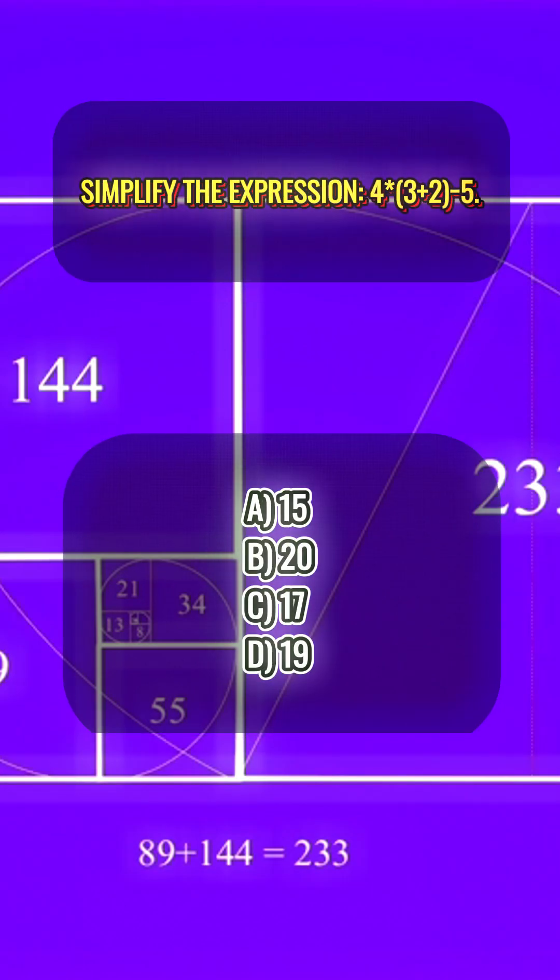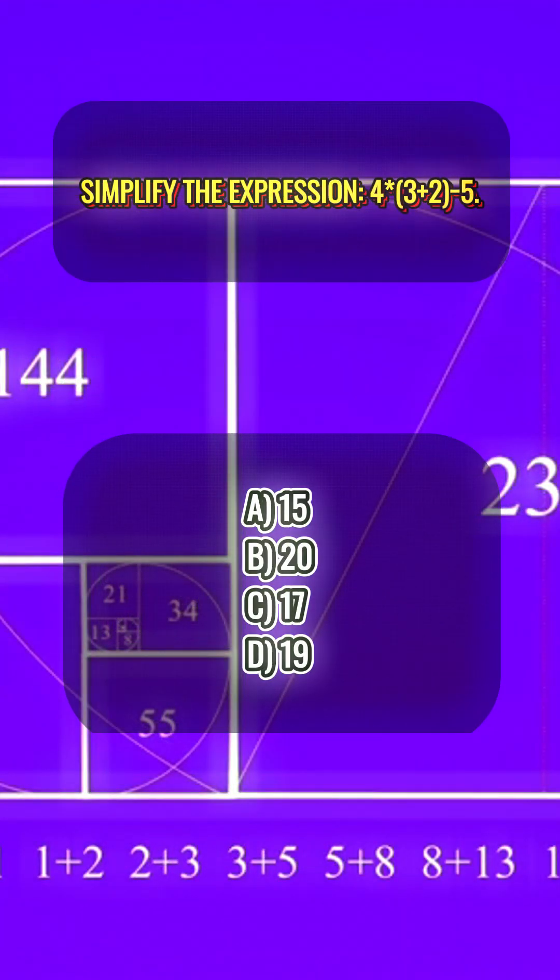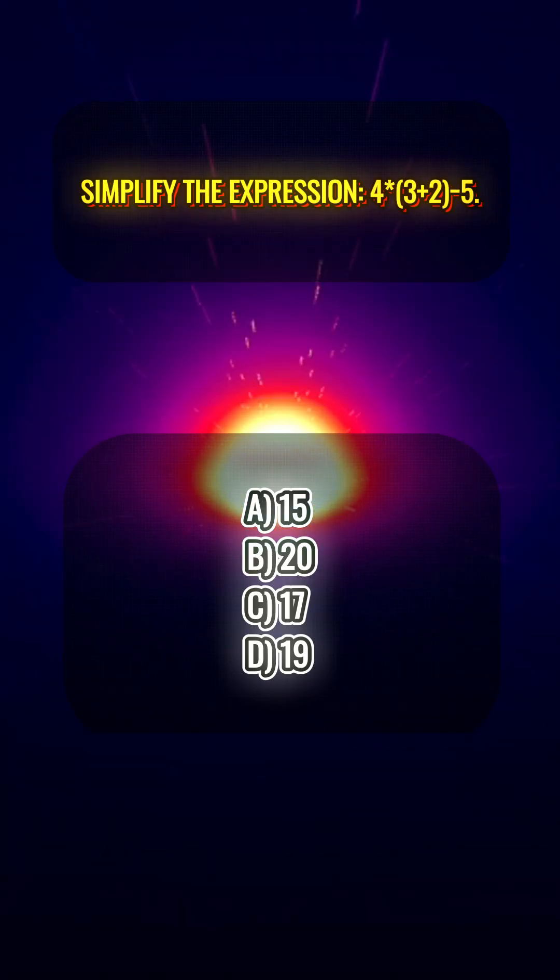Simplify the expression 4 times 3 plus 2 minus 5. A, 15. B, 20. C, 17. D, 19.